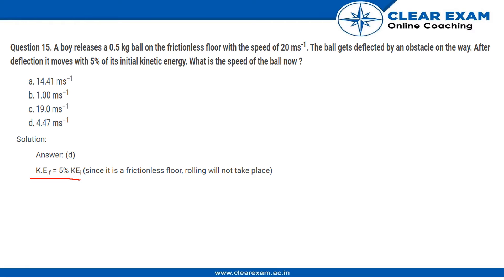As it is a frictionless floor, the percentage will be completely present. So ½mv² = (5/100) × ½mu², where u is the initial speed, that is 20.